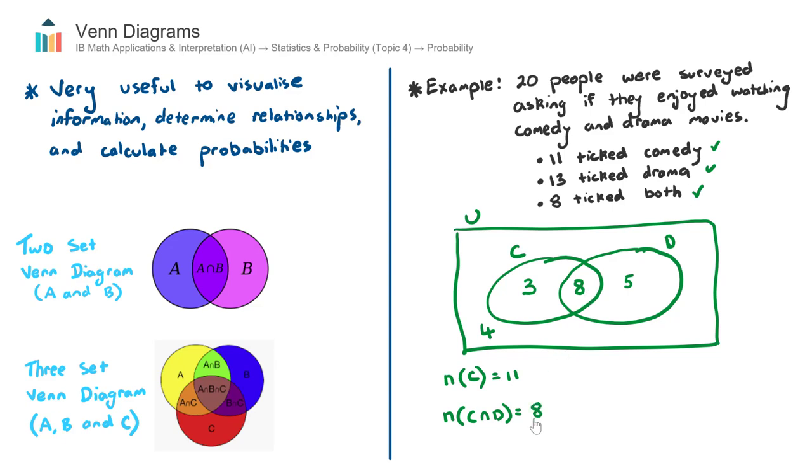Let's now go into some probability questions. So the difference here will be I have a capital P rather than a little n. So the probability of out of the 20 people, what is the probability of a randomly selected person saying that they enjoy watching dramas? Well, the way to think about that is how many people are inside of the drama set? That is this 8 plus this 5, that's 13, out of a total of 20 people.